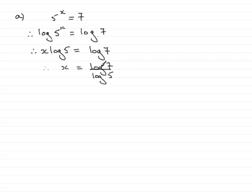Don't make any common mistakes like canceling out the logs - you can't do that. It's just log 7 divided by log 5. Just need to get on the calculator and work that out. So if you do that, you'll find that you get x equals 1.20906 and so on.